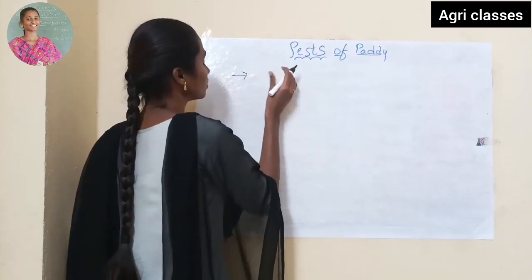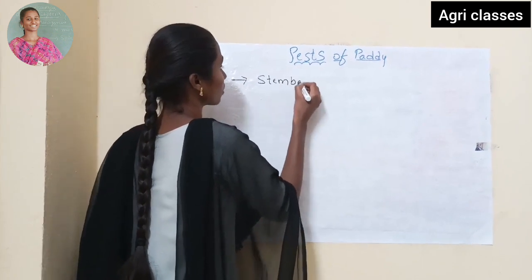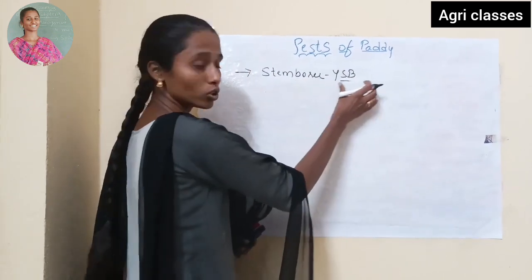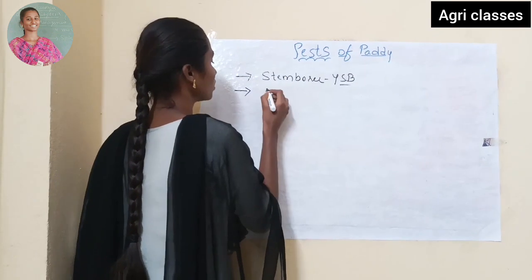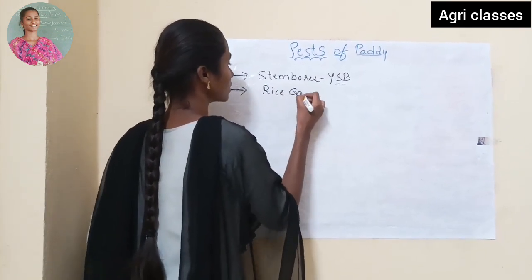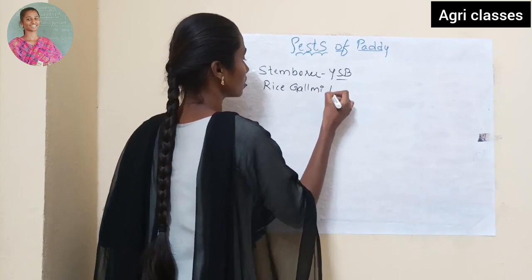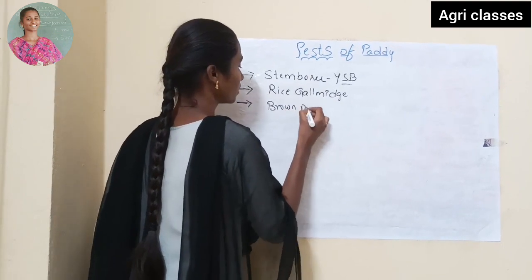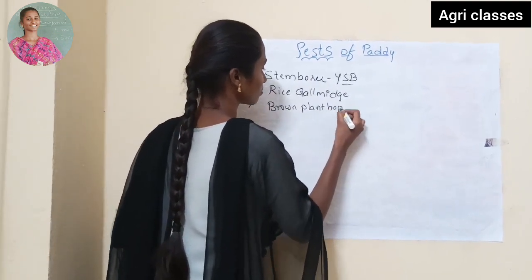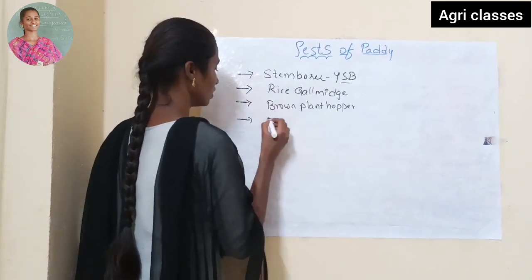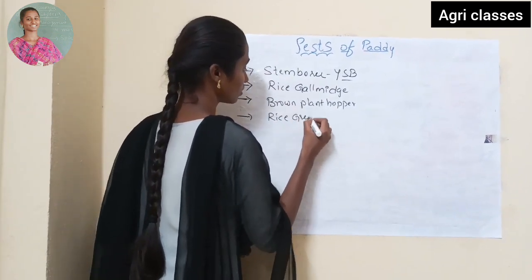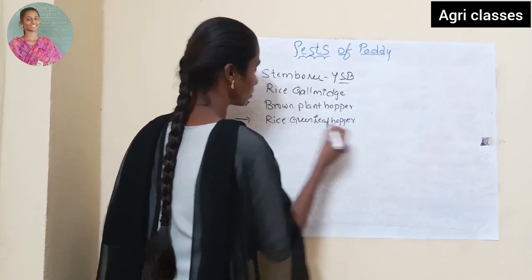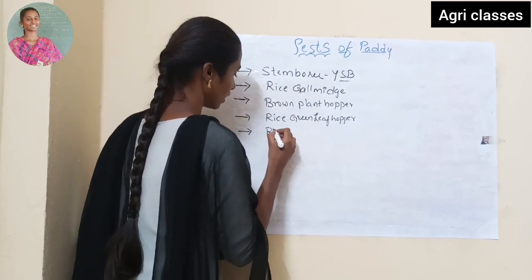So the first pest is Paddy Yellow Stemborer. The second one is Rice Gall Midge. Next is BPH, Brown Plant Hopper. Then Rice Green Leaf Hopper, and then Rice Leaf Folder.